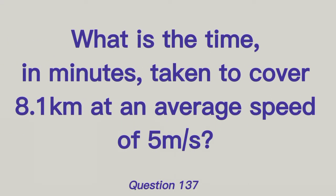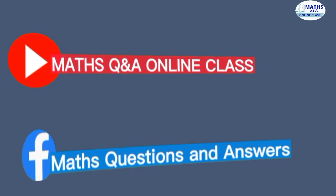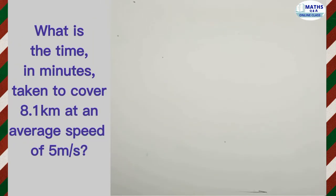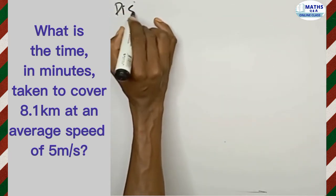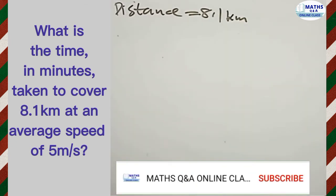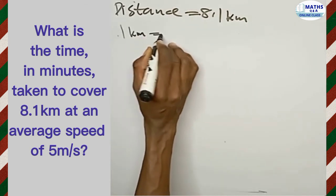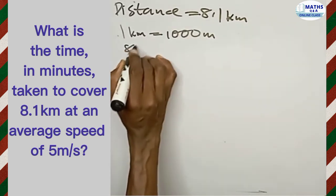What is the time in minutes to cover 8.1 kilometers at an average speed of 5 meters per second? We've been given the distance, which is equal to 8.1 kilometers. Since the average speed is given in meters per second, we need to convert 8.1 kilometers into meters. One kilometer is equal to a thousand meters, so if we have 8.1 kilometers...